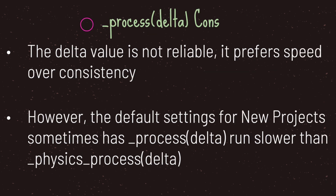Now let's look at the negatives of the process virtual method. The delta value in process is not reliable — sometimes it will give you back a zero value. The reason is just how Godot handles code at the lower level. As a summary, especially for beginners, just know that the process virtual method prefers speed over float value consistency.